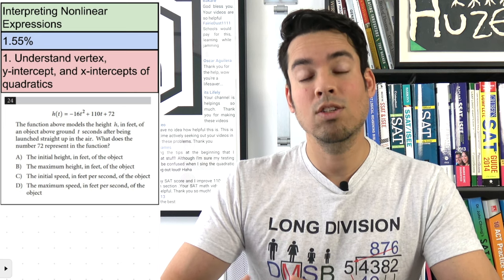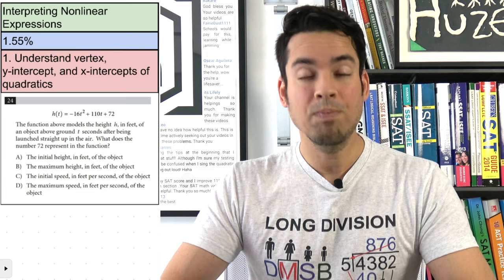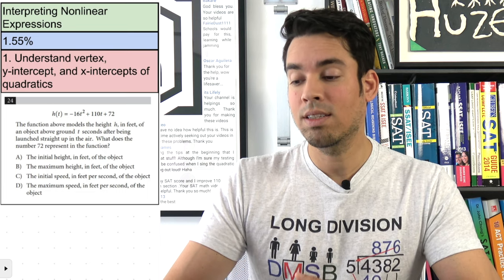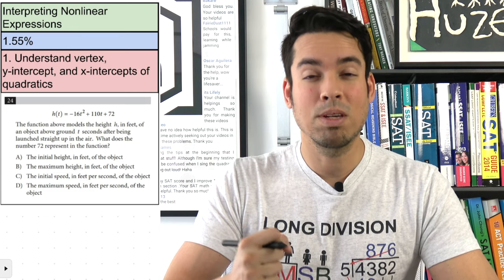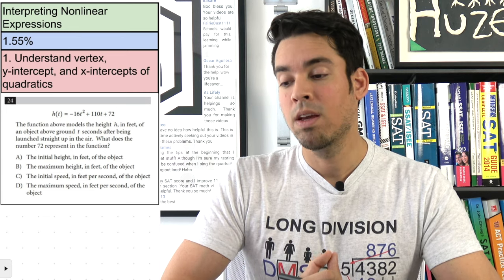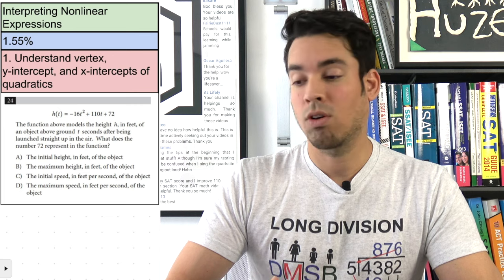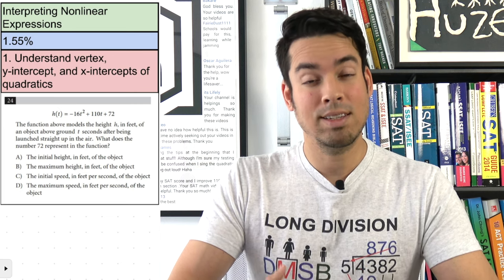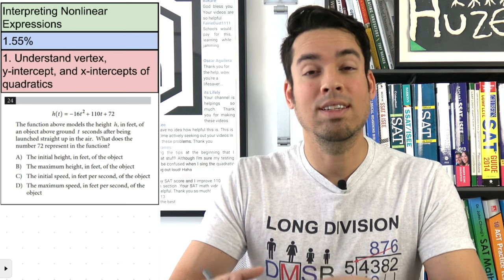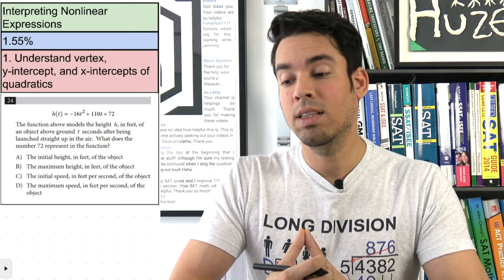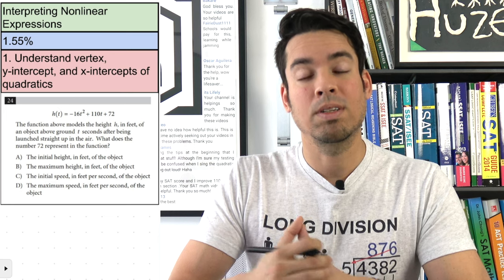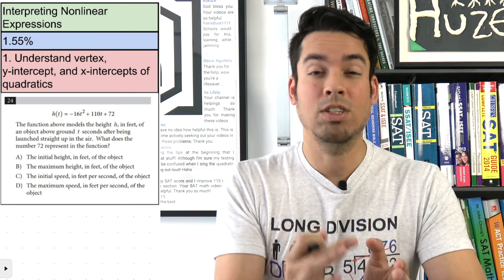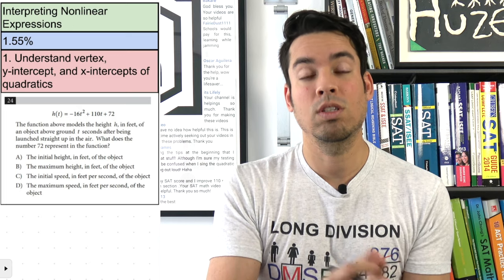The vertex is usually either the low point or the high point. In this case, because the 'a' term is negative, the vertex is going to be a maximum height. The x-intercepts — since this models a trajectory — represent when the object hits the ground. The y-intercept is the actual starting position, because the y-intercept means time zero.